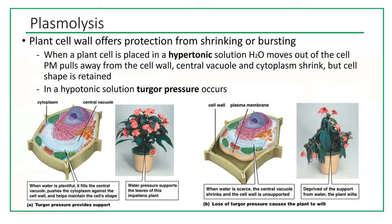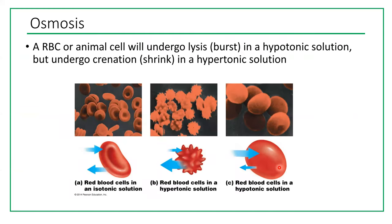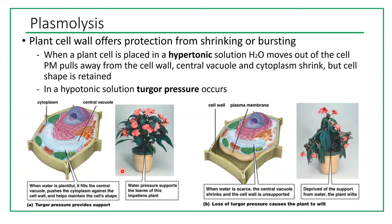When cells are in hypertonic solution and don't have enough water, they wilt. When cells are in hypotonic solution, the central vacuole is full, we have turgor pressure towards the cell wall, and plants stay healthy. The animal cell can burst in hypotonic solution, but plant cells are perfectly fine due to the cell wall. In hypertonic or even isotonic solution, plant cells lose their turgor pressure and the plant will look like it wilts.